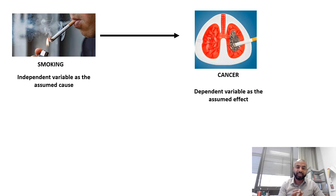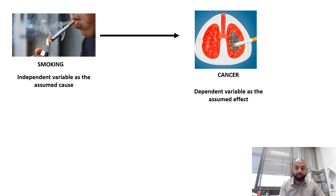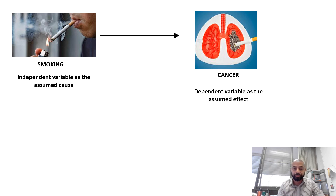We say that smoking is assumed to be causing cancer — that is the causal relationship we are investigating. Remember the definition: the variation in the independent variable is not caused by any other variable. In the case of cancer, which is a dependent variable, we can say that cancer is caused because of smoking. But smoking is not caused by cancer — the rate of smoking can go up and down independently. Smoking is affecting cancer, but cancer is not affecting smoking.